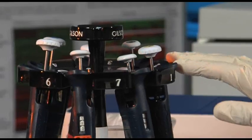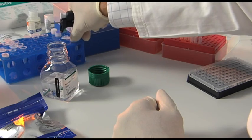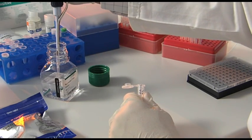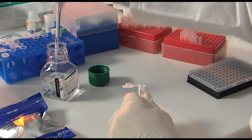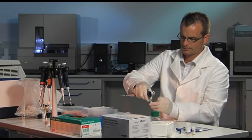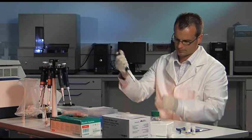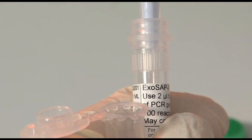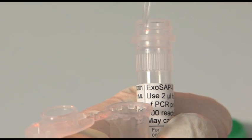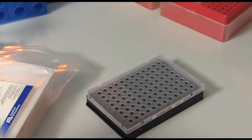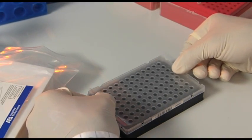The next step in Applied Biosystems fast resequencing workflow depends on the application. If you are looking for mutations, an enzymatic purification of the PCR products is recommended. The enzymatic purification can be carried out in the same plate used for amplification. Simply pipette the enzyme cocktail into the samples and incubate approximately 30 minutes in the Verity Fast Thermal Cycler.